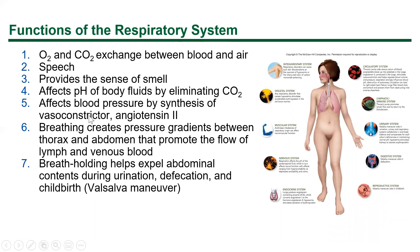The respiratory system also provides your sense of smell, affects the pH of body fluids. Angiotensin-converting enzyme (ACE), which is a critical component of the renin-angiotensin-aldosterone system, is actually located in the lungs. If you look at the renin-angiotensin-aldosterone feedback loops, you'll find that the conversion step from angiotensin I to angiotensin II occurs in the lungs — this is the component that ACE inhibitors act on.